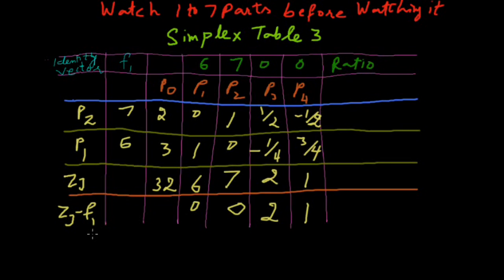Here we calculate the value of X1 and X2. X1 value will be 3 and X2 value will be 2. Our answer: X1 is equal to 3 and X2 is equal to 2 because ZJ minus F1 is 0 or positive. This is our answer.